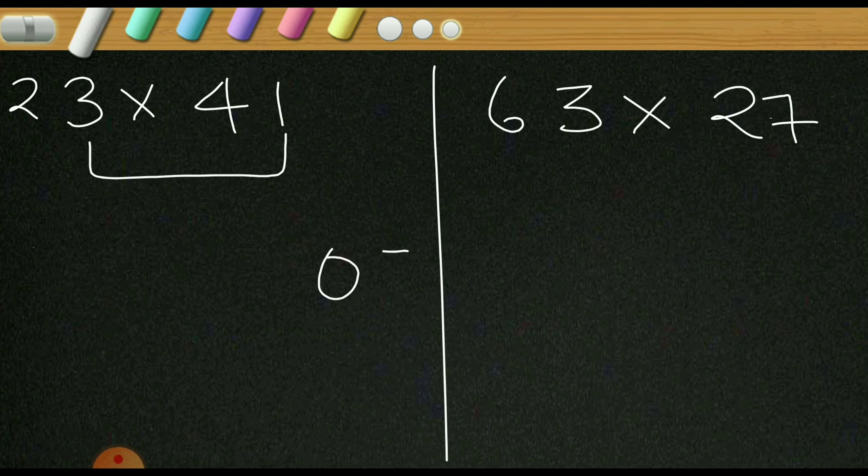Now the second step is to multiply the tens place digits, that is 2 into 4, that is 8. Now the next step is to multiply these two numbers. What is 4 into 3? 12.